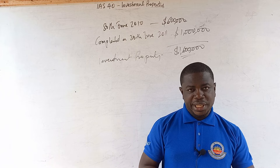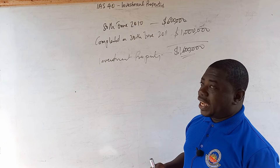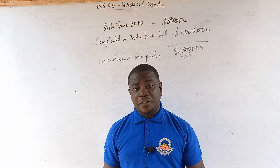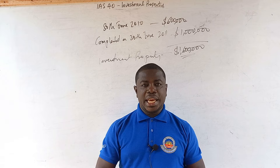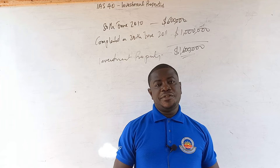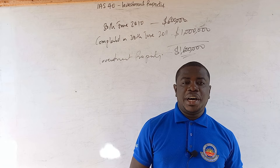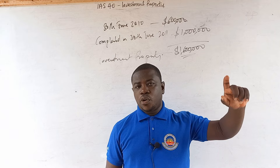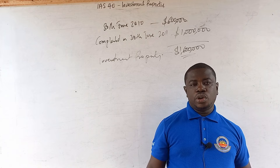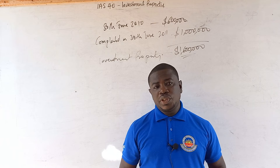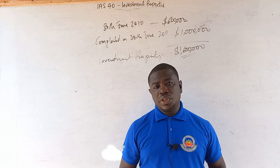Any costs incurred after the completion of construction should be treated as period expenses and not added to the cost of investment property. In the exam, you need to state where recognition starts, when the building is recognized, the values at recognition, and the fact that subsequent costs are expensed. That is the solution — simple but important. This brings us to the end of part one of our lesson on IAS 40 Investment Property. In part two, we will cover subsequent recognition, the cost and fair value models, depreciation, impairment, and remaining concepts. Please subscribe, share, and until we meet again — bye for now.